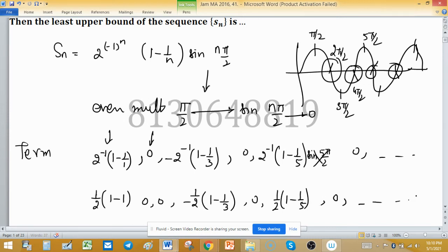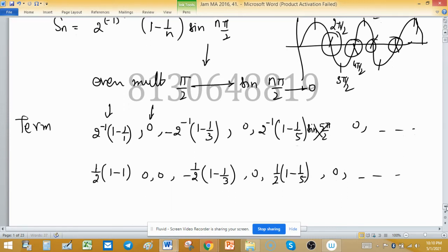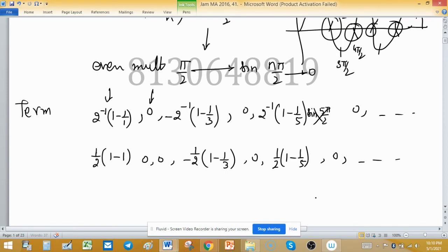As (1 - 1/n) is involved in the sequence, after some time the limit of this will be 1. So the value of some terms in the limit will be 1/2 times 1 times the value of sine, which is 1. And sometimes the value will be the negative of 1/2.